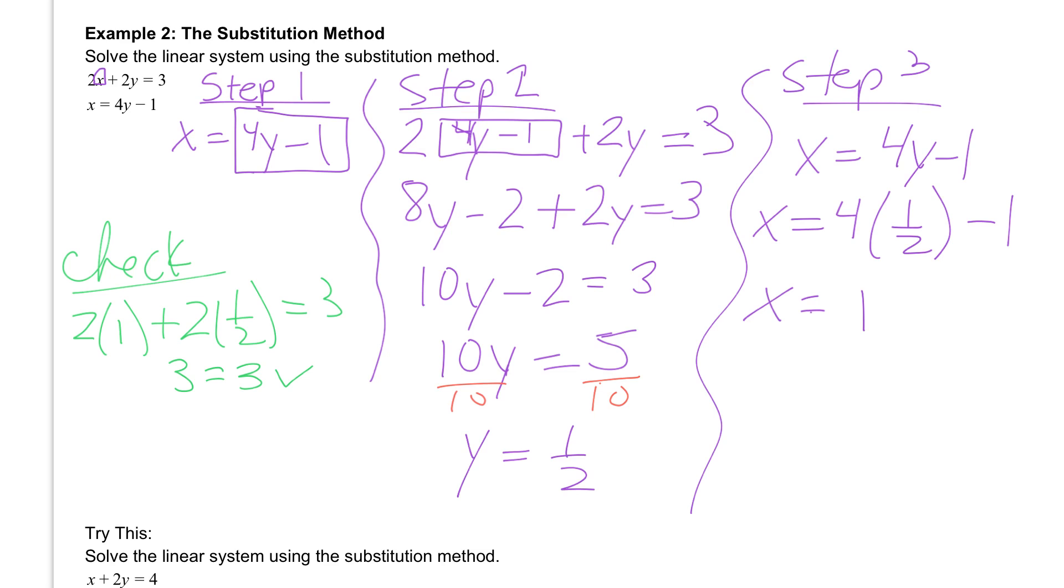And again, if you can't do that in your head, you can plug it into your calculator. Then we need to check the bottom equation. We have x, which is 1, equal to 4 times our y value of 1 half minus 1. 4 times a half is 2. And 2 minus 1 is 1. So it works for the bottom one as well. So we can say that our answer is as an ordered pair x goes first, so 1, 1 half. Or we can write it as x equals 1 and y equals 1 half.